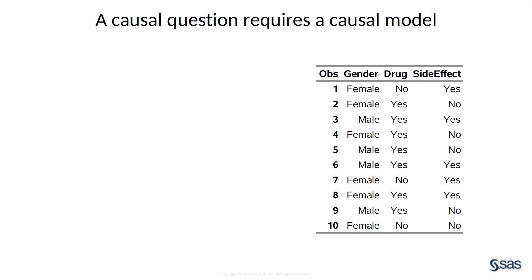Let's begin with a simple example. Suppose you have been asked to determine whether patients who take a new drug are more likely to experience a specific side effect. To answer this question, you have a data set that includes information about which individuals are taking the drug and which individuals report the side effect. The data set also includes the gender for each individual. However, this data set was not collected in a randomized experiment. Rather, this is an observational data set — for example, it could have been obtained from electronic health records.